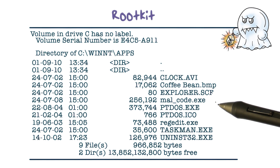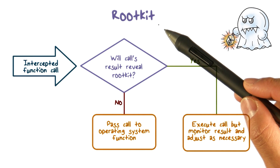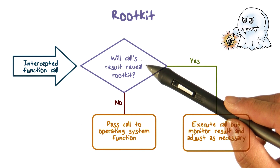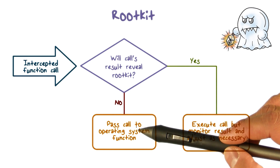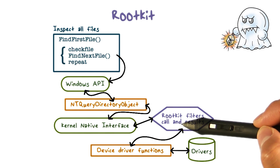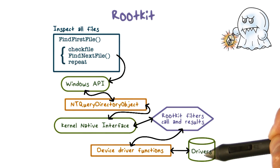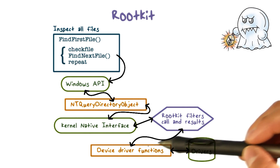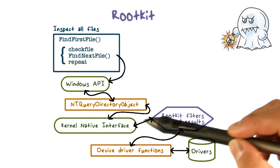In order to hide the malware from the user, the rootkit intercepts any function call to the operating system, and then reasons whether the call will end up revealing the malware. If no, it will just pass the call to the appropriate operating system function. If yes, it executes the call but intercepts the result so that it can filter out the result as necessary to hide the malware. That is, the rootkit intercepts the function call, knows the OS function is looking at files in a directory, and knows the return results may contain malcode.exe. So the rootkit filters out the file name so that the user will not see it in the result.